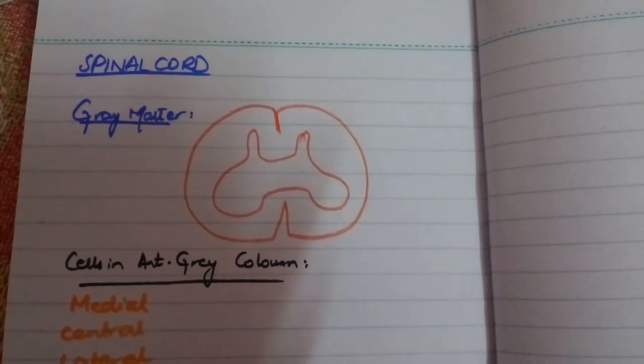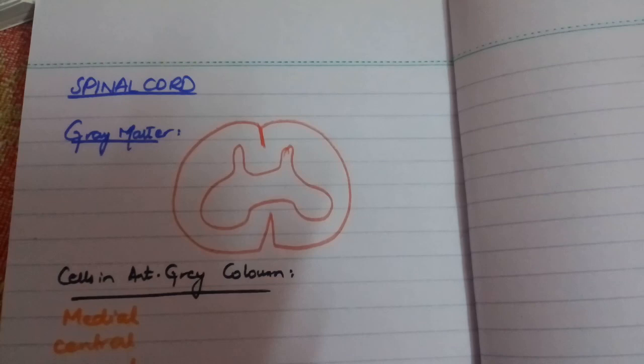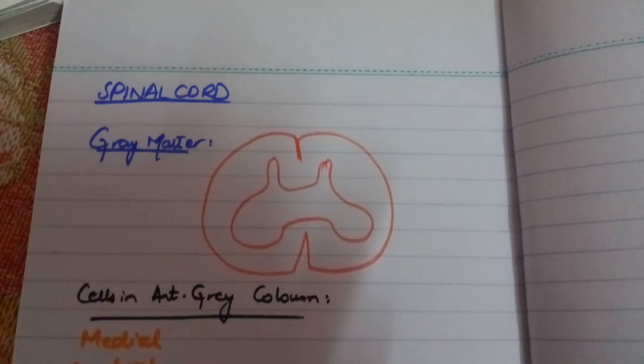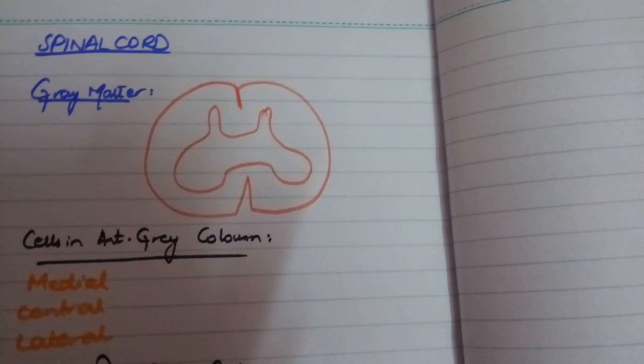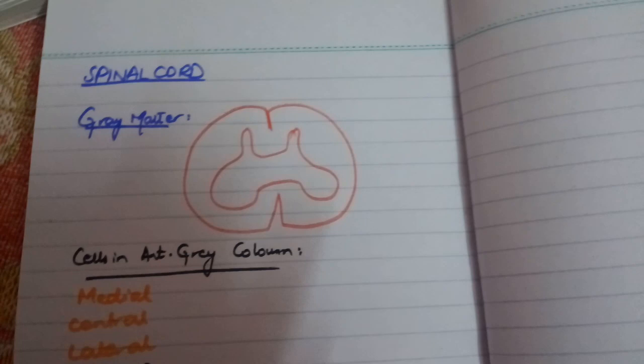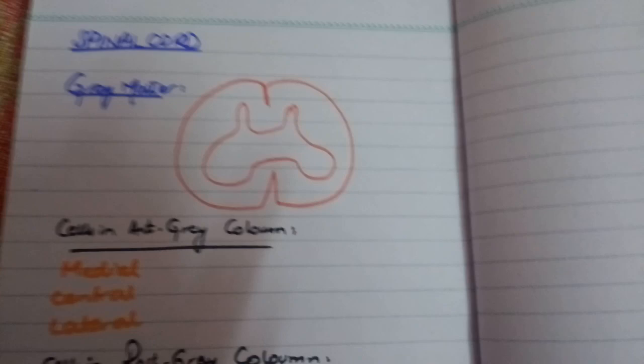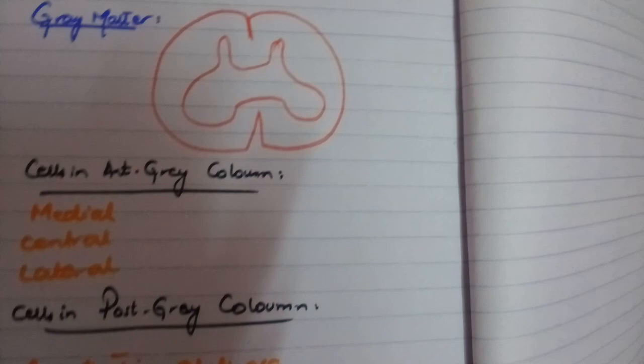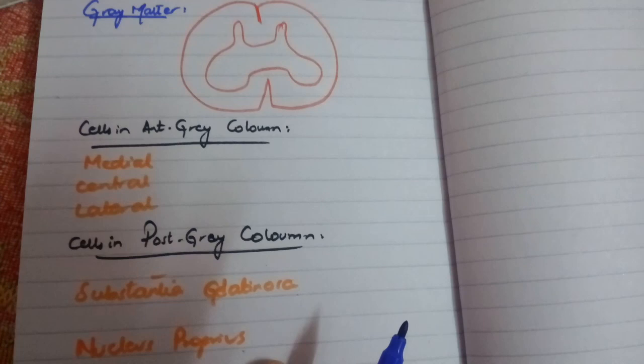Assalamu alaikum. Today in this video I'm going to give a complete description about the spinal cord, the gray matter, the white matter, and also about the ascending and descending tracts. The first, second, and third order neurons will all be explained in different parts of this video. I'll tell you the ways to learn and memorize it in the easiest way — it's very easy, just watch this video.